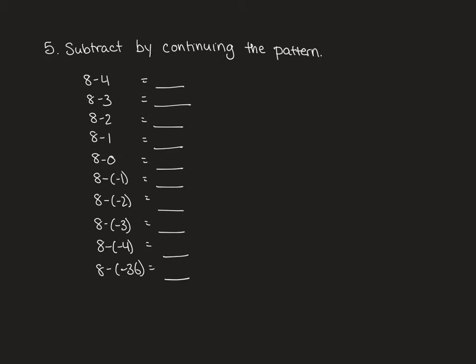Question 5 is going to get you to subtract by continuing the pattern. So the top numbers you'll be able to figure out fairly easily in your head. 8 minus 4 is 4. 8 minus 3 is 5. 8 minus 2 is 6. 8 minus 1 is 7. 8 minus 0 is 8. Now look at what's happening in our answers. Each time we're going up by 1. When the number that you subtract by goes down by 1, the answer goes up by 1. So 8 minus -1 is 9. 8 minus -2 is 10. 8 minus -3 is 11. 8 minus -4 is 12.